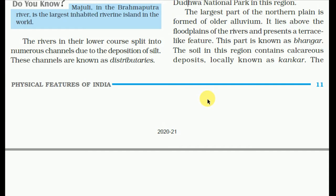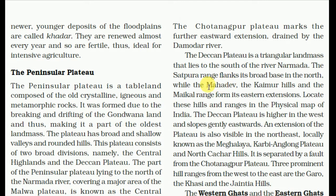A large part of the northern plain is formed of older alluvium. It lies above the flood plains of the rivers and represents a terrace-like feature — this part is known as the Bhangar. The soil in this region contains calcareous deposits locally known as Kankar. The newer and younger deposits of the flood plains are called Khadar. They are renewed almost every year and are very fertile, thus ideal for intensive agriculture.